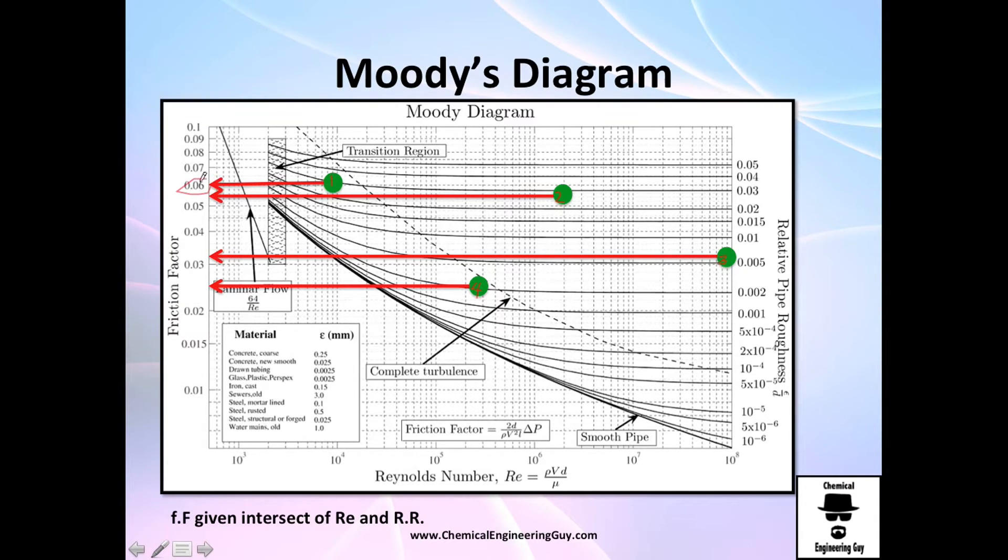For one, you will say it's about 0.06. For two, maybe 0.055. For three, you could say 0.032. And for this number four, you could say 0.025. And that's it, guys.